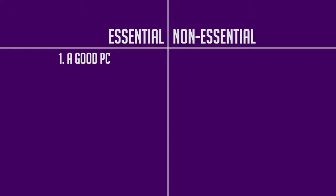Starting with the essentials list, right at the top is a decent PC. You want to stream from PC, so having a PC that can handle a stream — with the encoding, the processing, and the uploading — is absolutely essential to getting your stream started. For this series we will also use OBS, Open Broadcaster Software, installed on the machine.